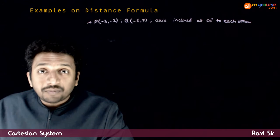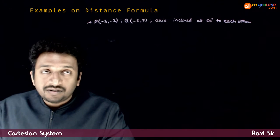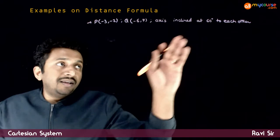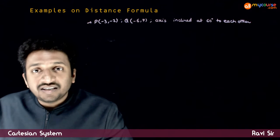It means we are talking about oblique axes. What is the distance between these two points if the axes are inclined at 60 degrees to each other?